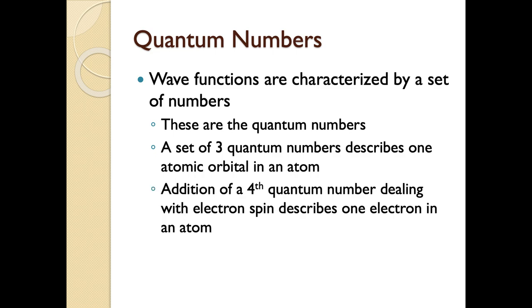We use what we call quantum numbers, and there are four of them in total. The first set of three quantum numbers is always going to be a description of an atomic orbital in an atom. If we add a fourth quantum number, now we're actually talking about a specific electron. For us, most of the time we're usually talking about quantum numbers as sets of three — meaning we're really looking at our wave functions as atomic orbitals, like three-dimensional shapes that the mathematical functions give us.